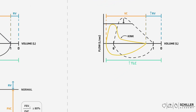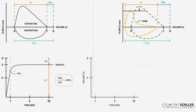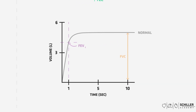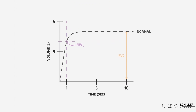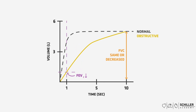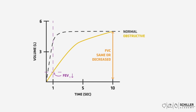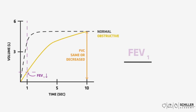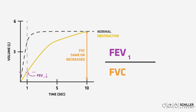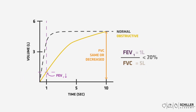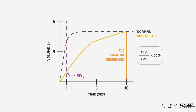Let's have a look at the first second of a forced expiration using a graph with time on the x-axis and volume on the y-axis, again comparing to normal forced vital capacity. In obstructive lung disease, we can see that the forced vital capacity is the same or slightly decreased, but the forced expiratory volume in the first second has dropped significantly. Obstructive lung disease can be diagnosed when the ratio between FEV1 and FVC is less than 0.7 or 70%. In this example, FEV1 is about 1 liter and the FVC is about 5 liters — so 1 divided by 5 is less than 0.7, and thus this is an example of obstructive lung disease.